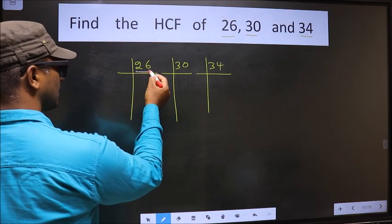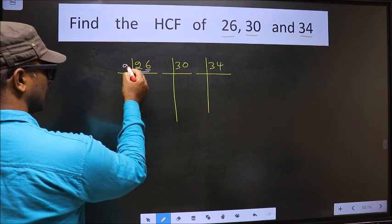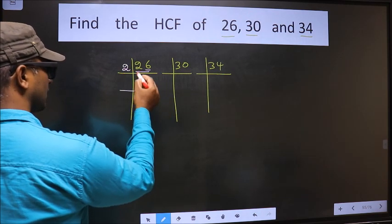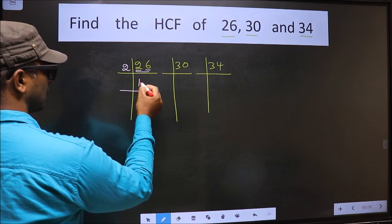For the first number, last digit is 6, which is even, so we take 2 here. The first number 2, when do we get 2 in 2 table? 2 times 1 is 2.